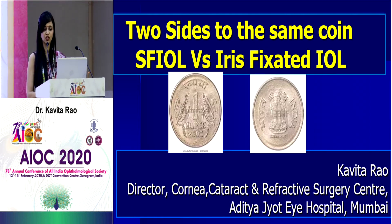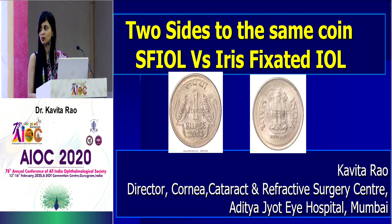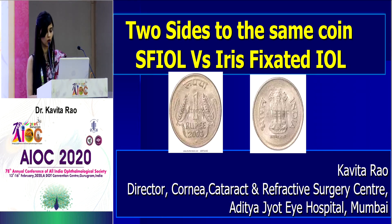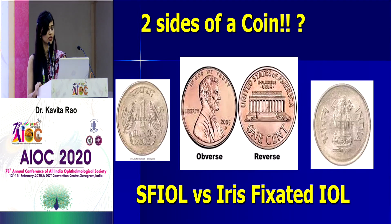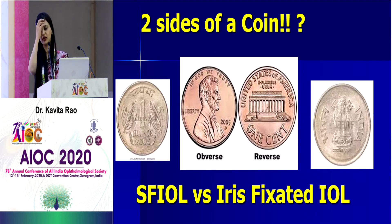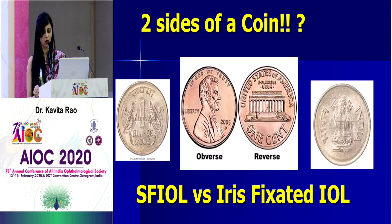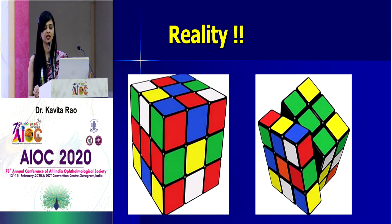It's a great pleasure to be here at AIOS and to be part of this wonderful and unique course. In ophthalmology, is everything just about two sides of a coin? In reality when we're actually doing cases, it's not just choosing heads or tails — it's about looking at multiple factors. It's more like solving a Rubik's cube.